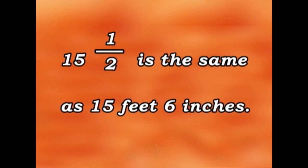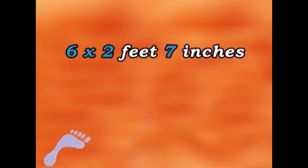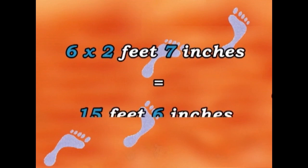So no matter which way we choose, we get the same answer. Six times two feet seven inches equals fifteen feet six inches.